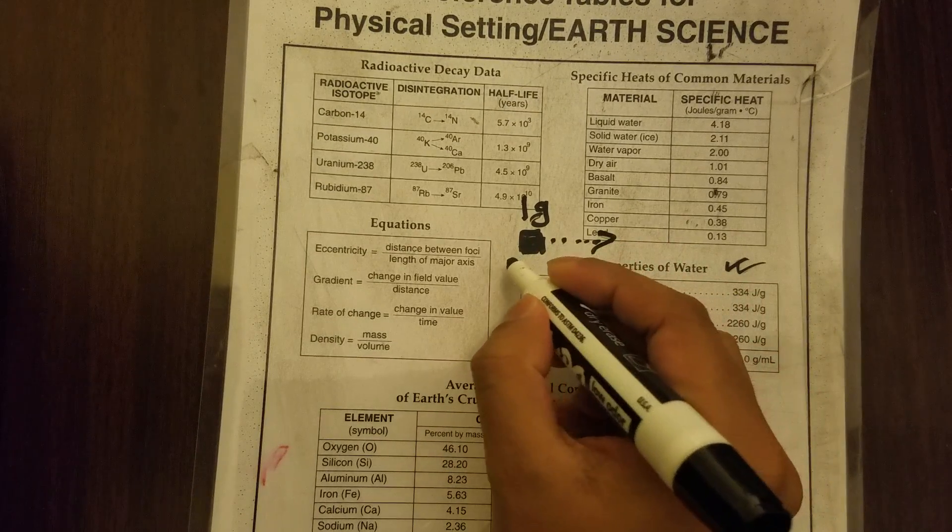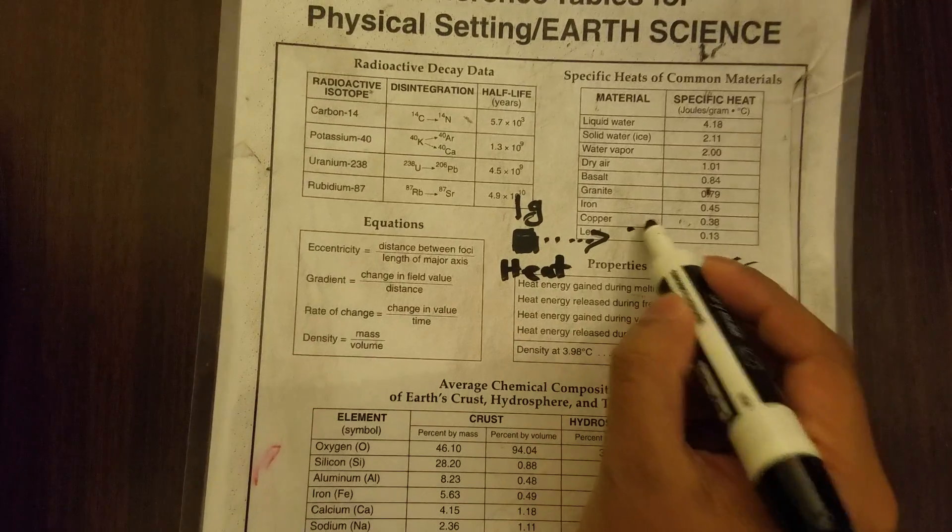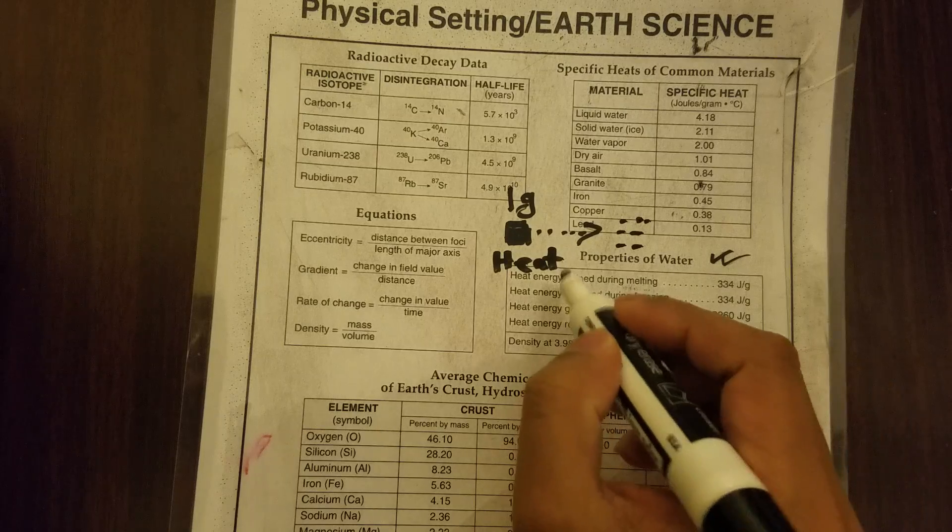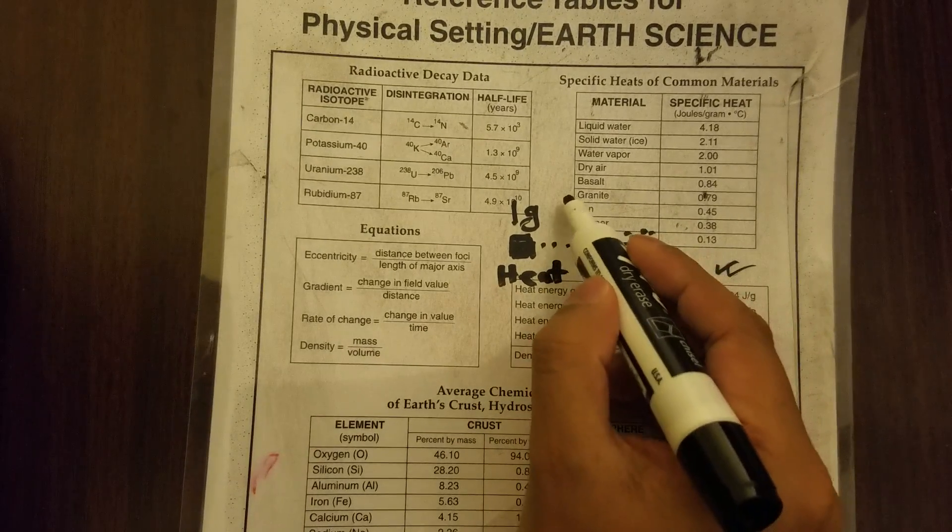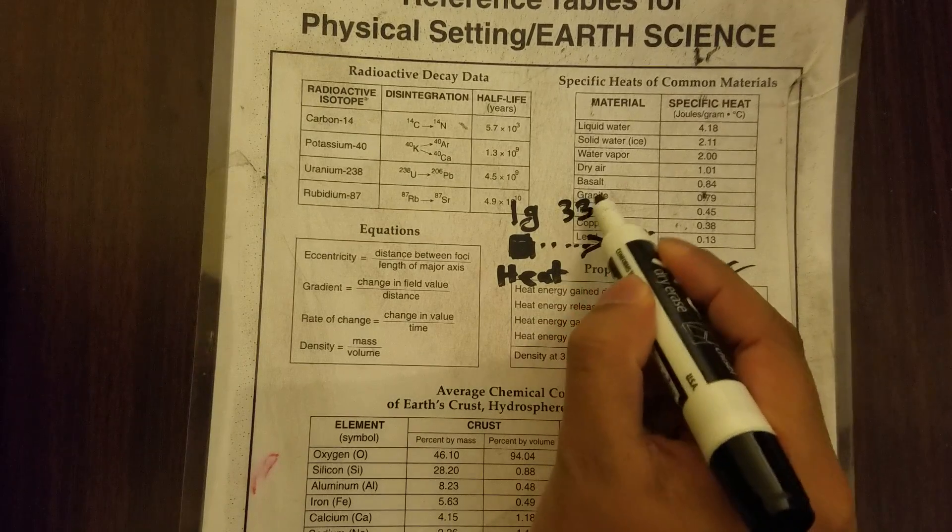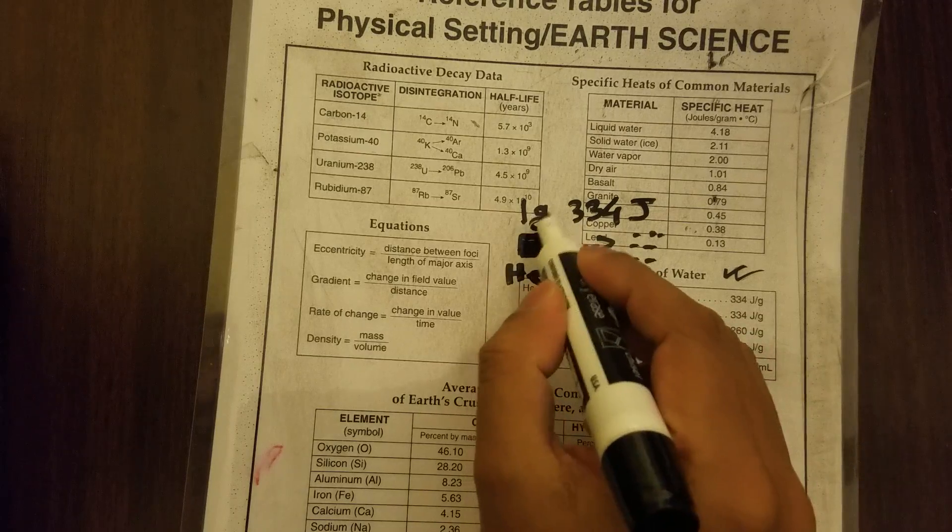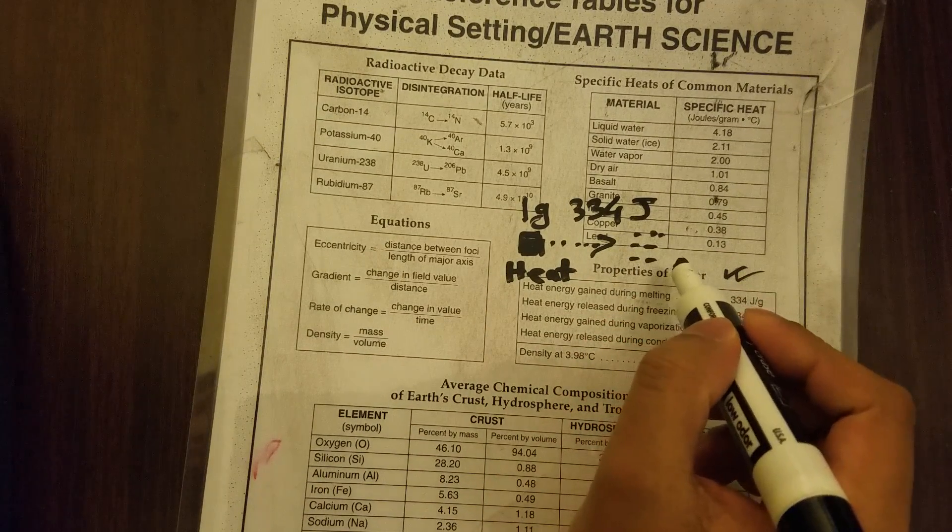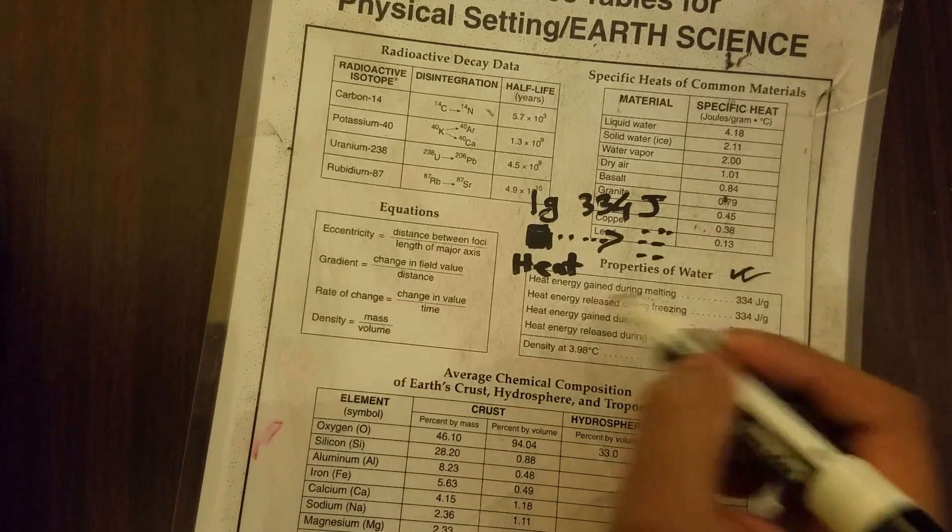If you're applying heat then you're getting liquid water. You are heating it and that heat energy is gained by this ice. How much? 334 joules. So if you are melting one gram of ice, you are gaining 334 joules of energy. That's the meaning of the first line.